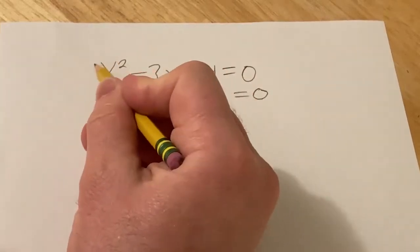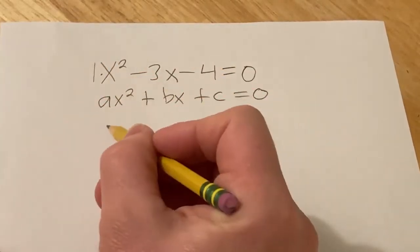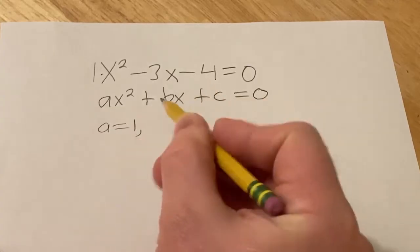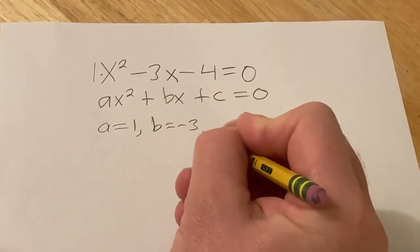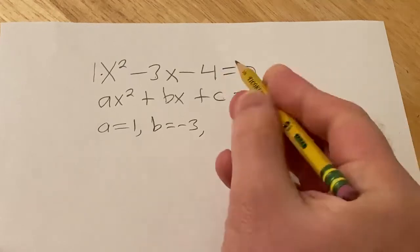And so you can see through matching, there's really a one here. So a is equal to 1, b is equal to negative 3, and c is equal to negative 4.